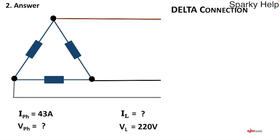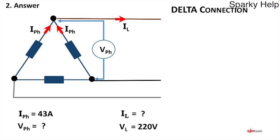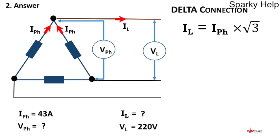In the meantime let's go back and answer question two. We had the phase current and the line voltage already given. Let's identify what we've got: there's the phase current — I've shown them going out, you could show them going in, just be consistent. There's il in the line — I've shown it in l1 but you could show it in any of the others. The phase voltage is across the phase resistors from one point to the next, and vl is between any two lines.